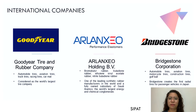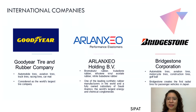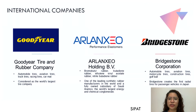Moving on to international companies, first we have Goodyear Tire and Rubber Company. It was founded in 1898 and became the world's largest tire company in 1916. They produced the first American-made synthetic rubber tire and also built fighter planes, nylon tires, racing tires, and car mats. Today, Goodyear continues to earn top honors in the rubber and plastics category of Fortune magazine's list of America's Most Admired Companies, with annual sales of more than 15 billion dollars.